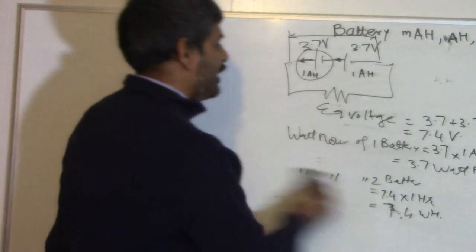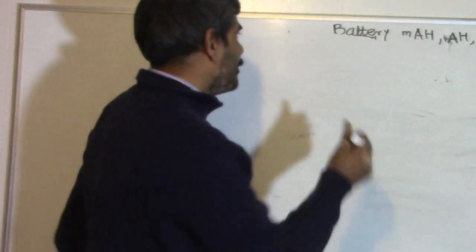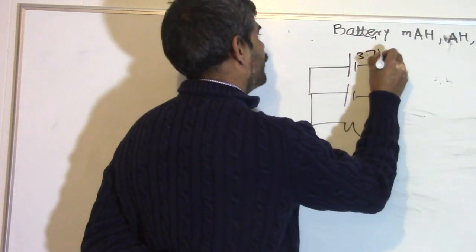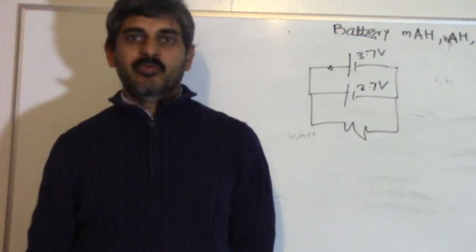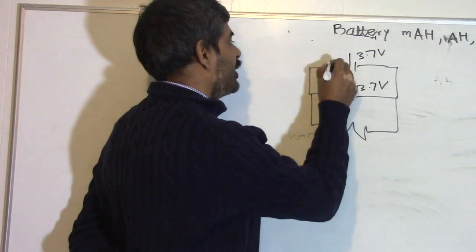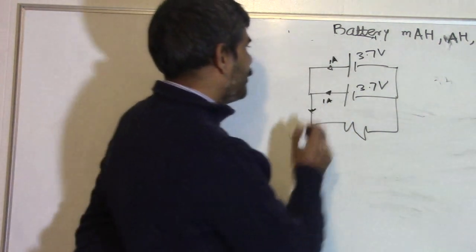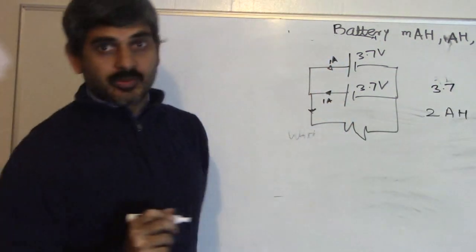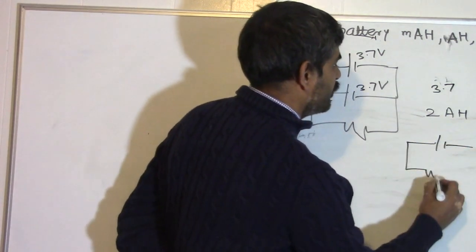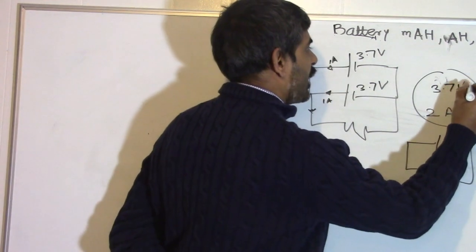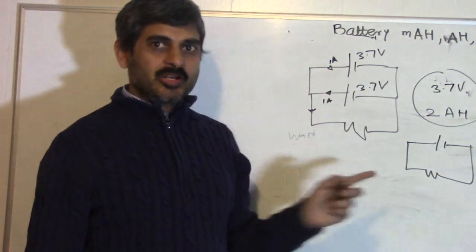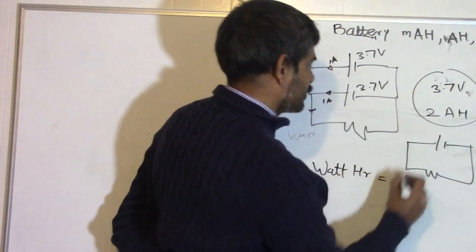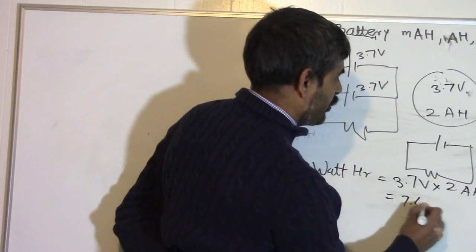What if I combine these two batteries in parallel? If I combine them in parallel and connect to a load — again, 3.7 volt and 3.7 volt — each can deliver 1 ampere for 1 hour, and these two currents combine together. So the total ampere hour rating for these two batteries becomes 2 ampere hour, and the voltage across them stays the same at 3.7 volt. This system is equivalent to a battery with 3.7 volt voltage rating and 2 ampere hour rating. Its ampere hour rating increased, but its watt hour rating is still the same: 3.7 volt multiplied by 2 ampere hour equals 7.4 watt hour.